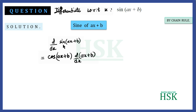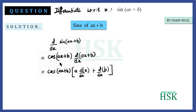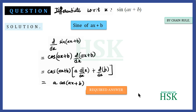Here, sin differentiates to cos, keeping the terms in the bracket as they are. Then cos(ax+b) is multiplied by d/dx of (ax+b). Writing d/dx of (ax+b) as a · d/dx of x plus d/dx of b — this gives 0 and 1 respectively — on simplification this gives a·cos(ax+b), which is the required answer. This is how we solve this question by the chain rule.